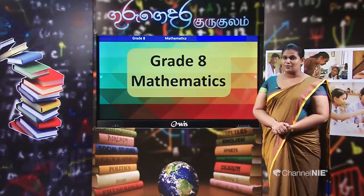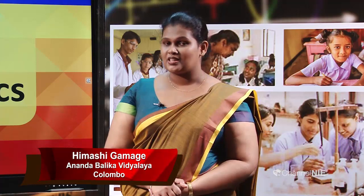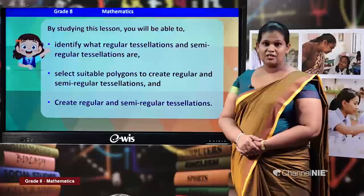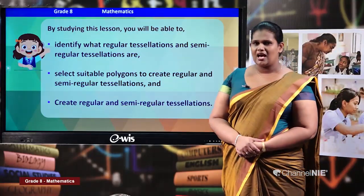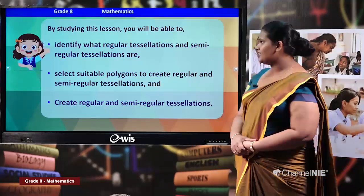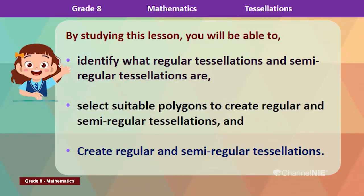Hello children, welcome to Grade 8 Mathematics classroom. Today we are going to talk about the 30th lesson of your mathematics textbook, that is tessellation. Quickly take out your mathematics textbooks and turn to page number 159. By studying this lesson, you will be able to identify what regular tessellations and semi-regular tessellations are, select suitable polygons to create them, and create regular and semi-regular tessellations.